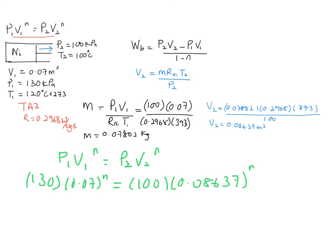what we get is 1.3 is equal to 1.234 to the power of n. And we solve this with ln 1.3 is equal to ln 1.234 to the power of n. So we solve n will be equal to 1.248.